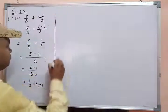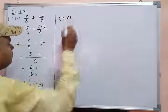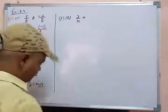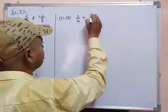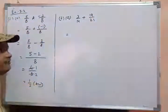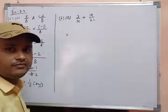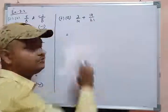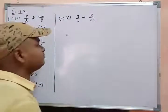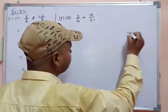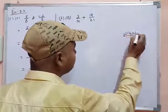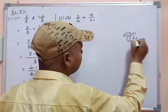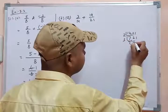Now question number 2. This question is an example of unlike rational numbers. So first of all you have to find the LCM. After finding the LCM, you have to convert both rational numbers into like rational numbers, and then you add. To find the LCM of 14 and 21: using prime factors, 2 × 7 gives 14, and 3 × 7 gives 21.